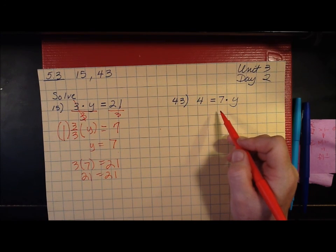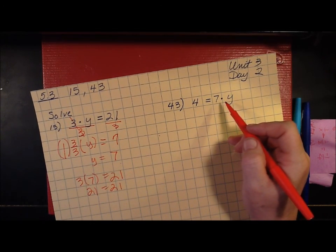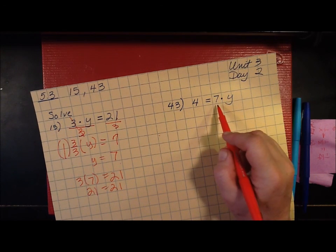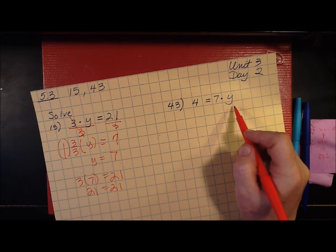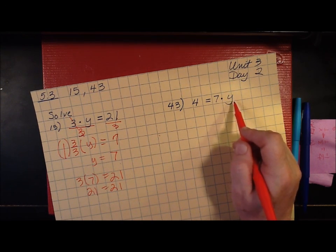Let's take a look over here for this one, which is number 43. And again, I want you to use division to find what y equals. Right now, y is being multiplied by 7.